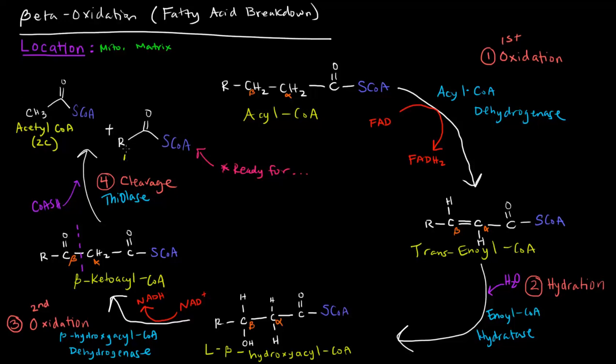So we end up with this acyl-CoA, which is what we started with, right? We started with an acyl-CoA. How is this one different? Well, this one is now two carbons shorter than this one that we started with, right? Because this acetyl-CoA, which is two carbons long, was cut off of the original thing. So now that we have this acyl-CoA that is now two carbons shorter than what we started with.